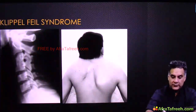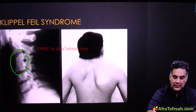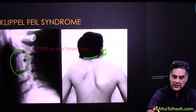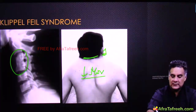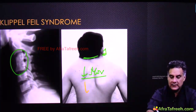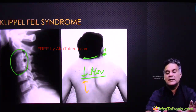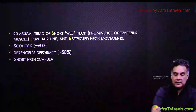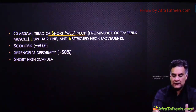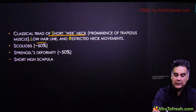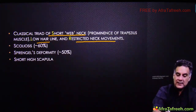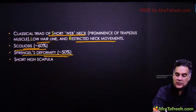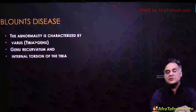If there is a fusion of cervical vertebrae, you will have a short neck which is webbed, low posterior hairline, and decreased movement — this is Klippel-Feil syndrome. It is associated with a short high scapula called Sprengel's shoulder. The classical triad is short webbed neck, low hairline, decreased neck movement. Sixty percent of cases have scoliosis; fifty percent have Sprengel's shoulder.